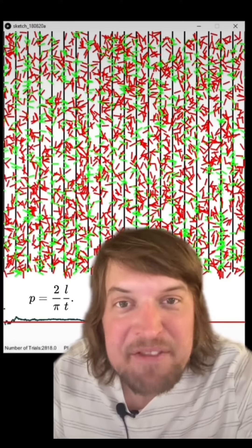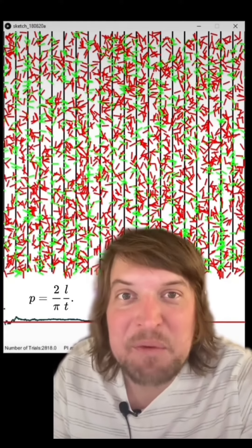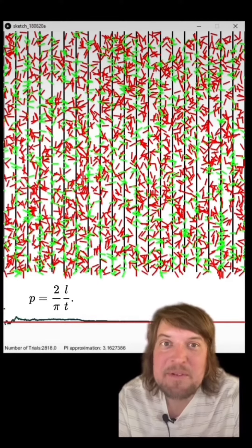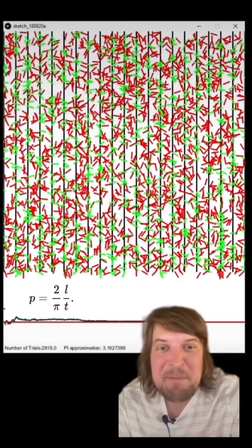When the sticks are half the length of the distance between the lines is when it matches up most nicely. You just count up the number of sticks you chucked and divide by the number of times they cross the lines, and you get a number that's approaching pi.